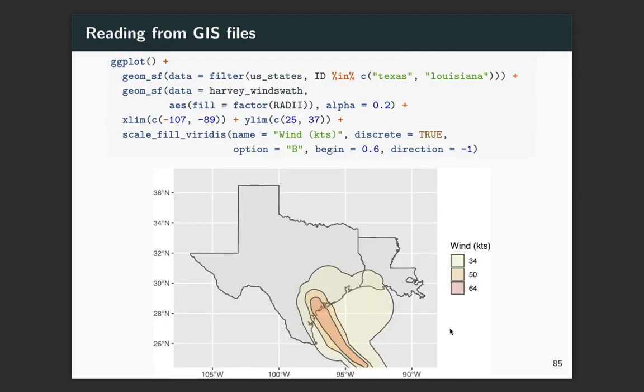Alright, so now we can plot that and let's look at this plot down here. You can see now we have these wind swaths that are showing how far winds of 34 knots and 50 knots and 64 knots extended from the storm. And we can see what areas of Texas and Louisiana were affected by winds of these speeds.